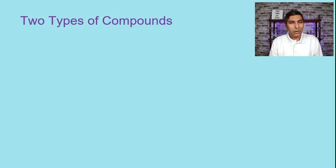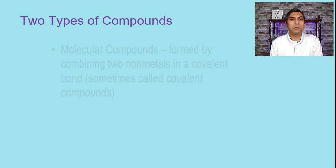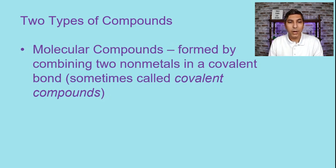Now as we talked about earlier there are two types of chemical bonds. As we learned in the last video we have ionic bonds and we have covalent bonds. Well guess what there are also two main types of chemical compounds as well. We have molecular compounds which are formed when two non-metals make a covalent bond and make a chemical compound that way.